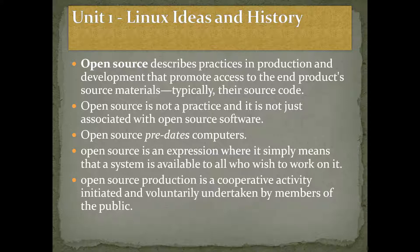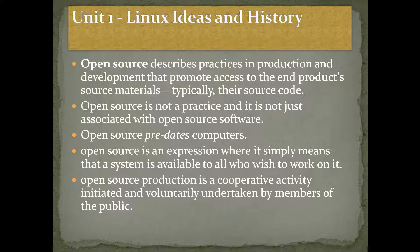Open source existed before computers, but at that time it was not known by that name. Even though it was practiced, it was never called open source, and it was never considered a movement — it was just there. Open source is an expression that simply means a system is available to all who wish to work on it. Here is my source code — I'm telling you all because I don't want to limit this knowledge to myself. You can use this idea, cultivate your own things, make your own things, sell it, or give it away for free. Open source production is a cooperative activity initiated and voluntarily undertaken by members of the public — whoever is using it is also contributing, and nobody is getting paid, and you don't have to pay to use and develop it.